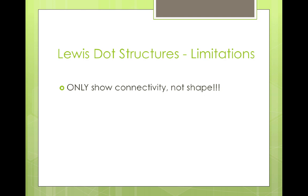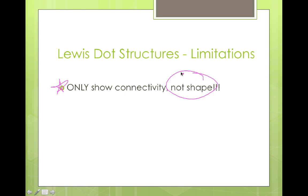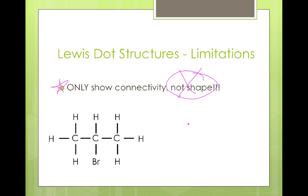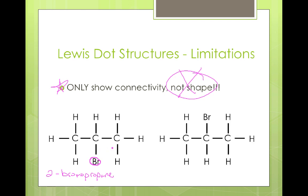As suggested earlier, Lewis dot structures have limitations — they only show connectivity, how the atoms are linked together, and do not show any information about the shape of a molecule. For example, we can look at 2-bromopropane. We can draw its Lewis dot structure in different ways that look very different, but the name is still 2-bromopropane — it is the same exact chemical. All the Lewis dot structure tells us is that the bromine is connected to the second carbon in the chain; where we draw it up or down has no bearing on connectivity.